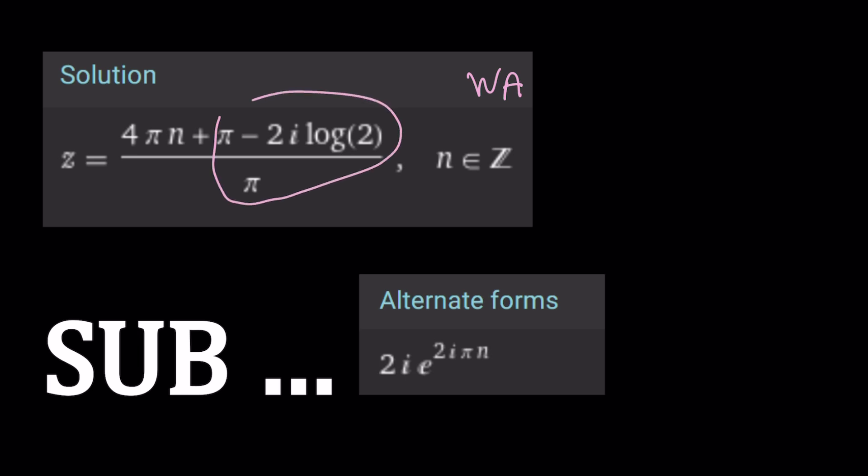This part seems to agree, but we have an additional 4 pi n because if you divide it by pi, you get 4 n. And the reason behind that is whenever you have a solution for this equation,